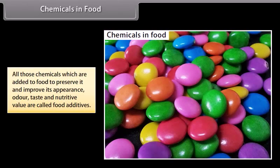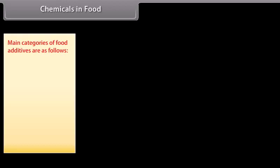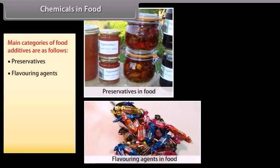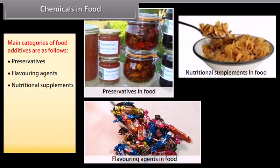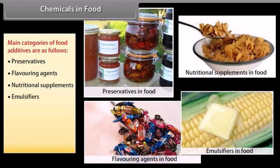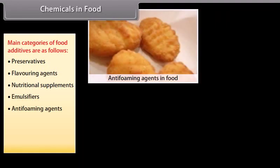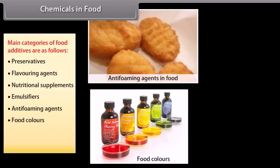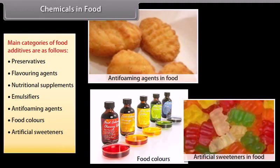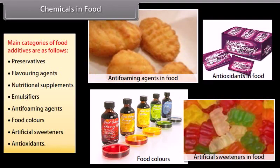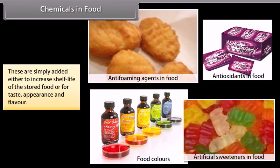Chemicals in food: all those chemicals which are added to food to preserve it and improve its appearance, odour, taste, and nutritive value are called food additives. Main categories of food additives are: preservatives, flavouring agents, nutritional supplements, emulsifiers, anti-foaming agents, food colours, artificial sweeteners, and antioxidants. These are added either to increase the shelf life of stored food or for taste, appearance, and flavour.